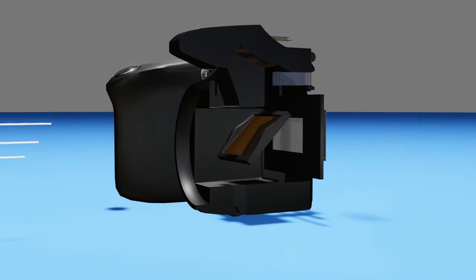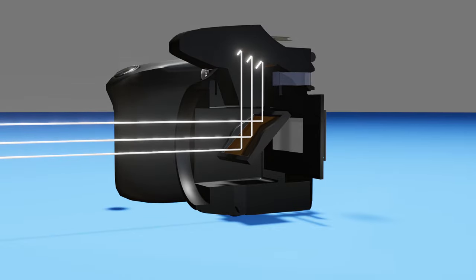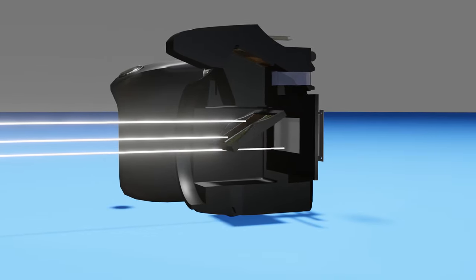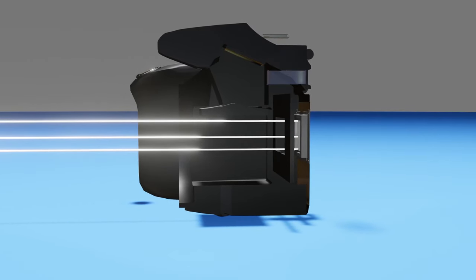Here is a demonstration of the mirror and the shutter working together to take a photo. The mirror flips out of the way, the shutter opens and then closes.